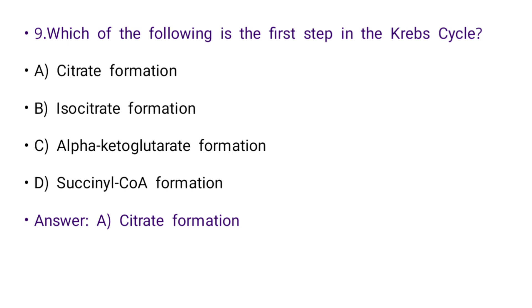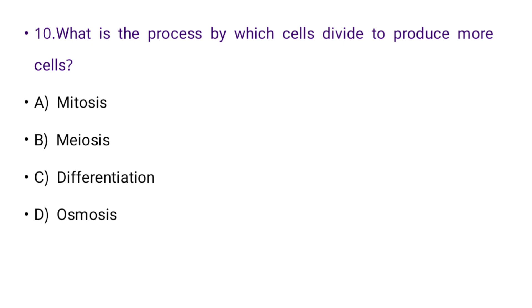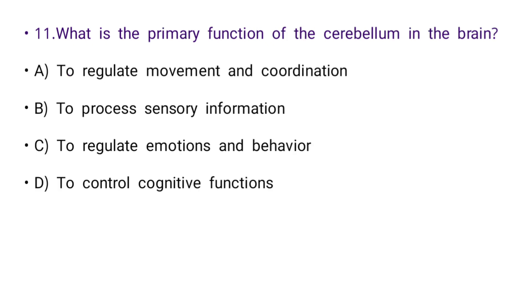Next: What is the process by which cells divide to produce more cells? Options: mitosis, meiosis, differentiation, or osmosis. The right answer is A: mitosis.